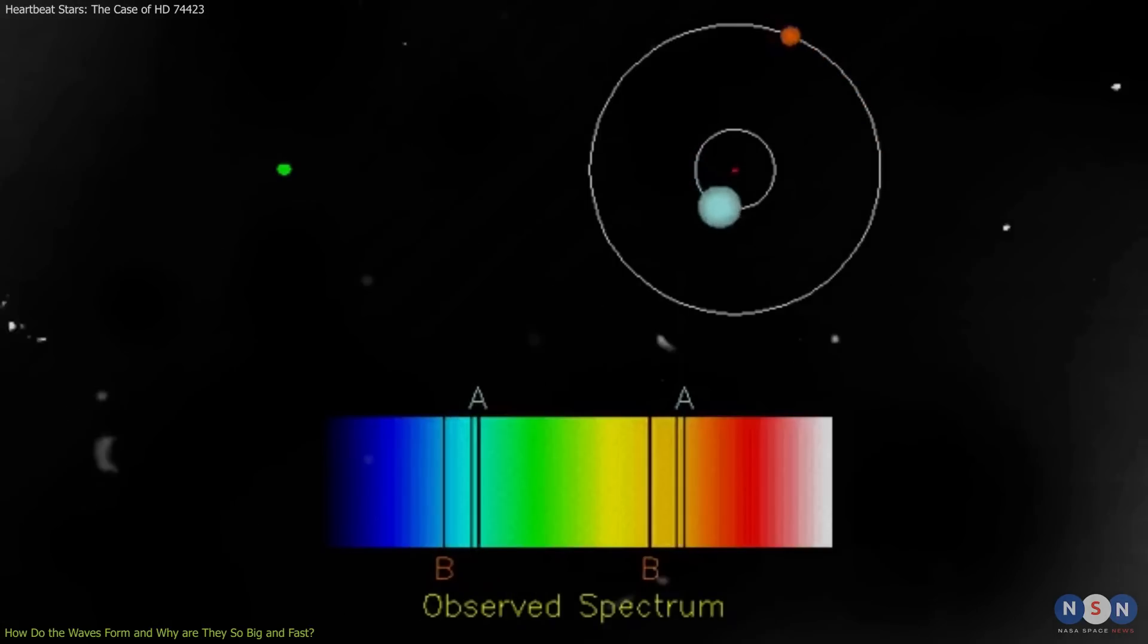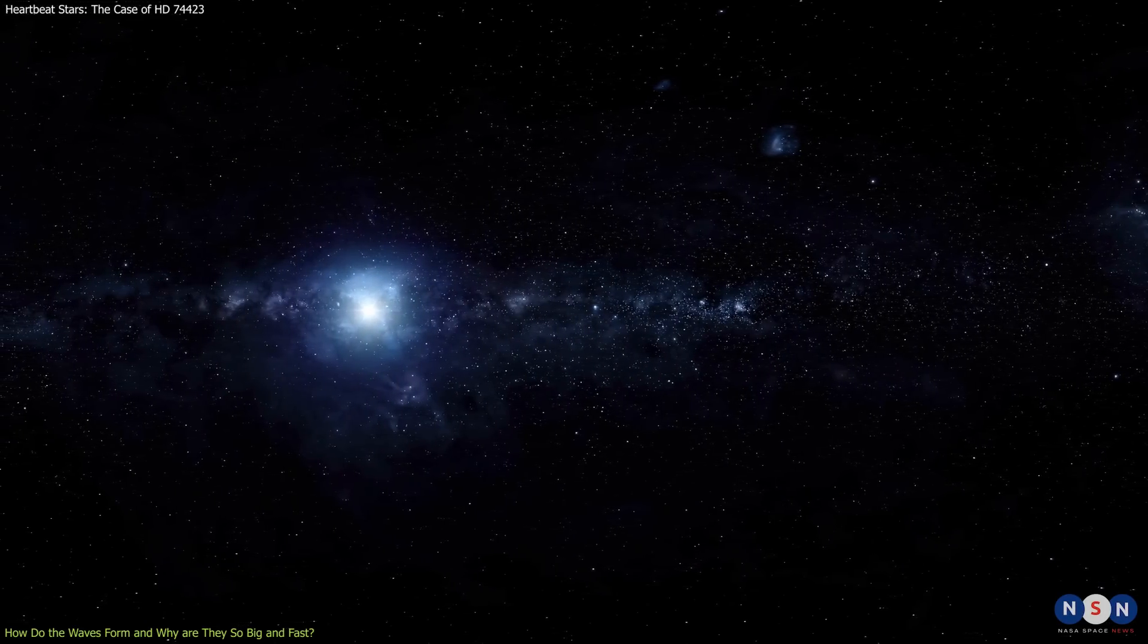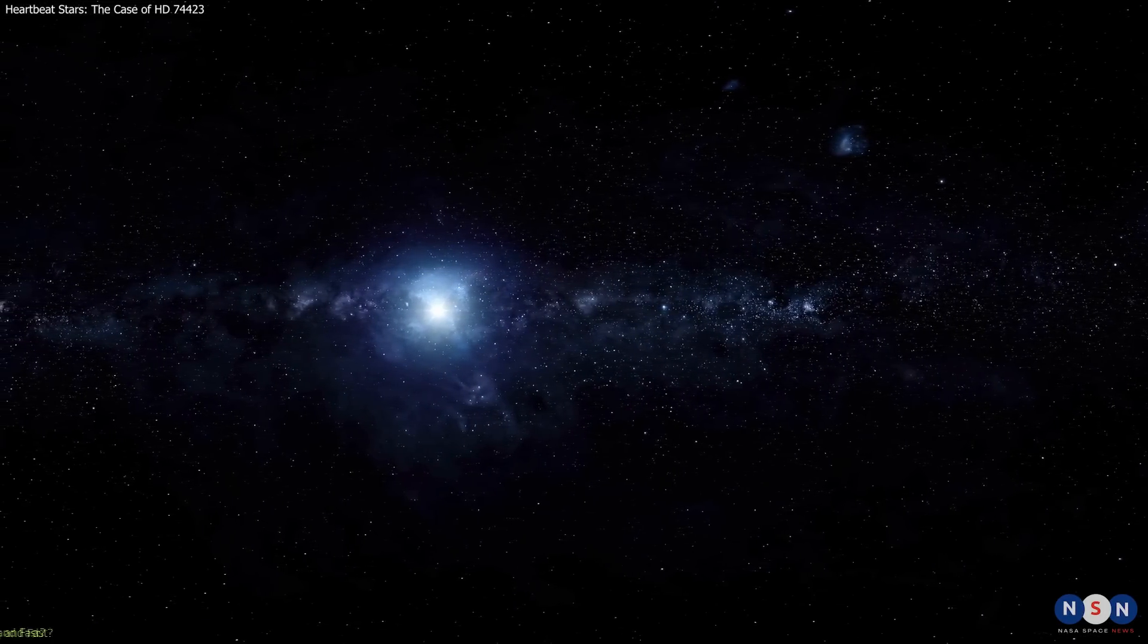And the spectrum can show variations in the absorption lines of different elements, such as iron and calcium, which tell us about the chemical composition and structure of the star.